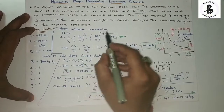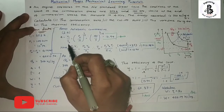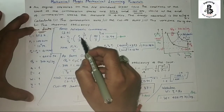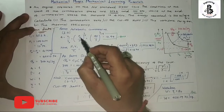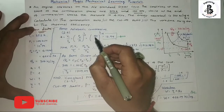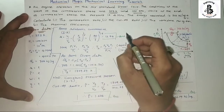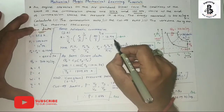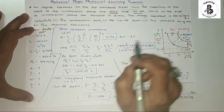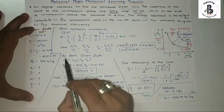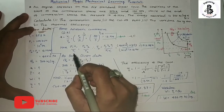From the adiabatic compression process 1→2, the compression ratio r = V1/V2 = (P2/P1)^(1/γ). Substituting P2 = 40 × 10⁵ and P1 = 1 × 10⁵, we get r = (40/1)^(1/1.4). The compression ratio is 13.94. That is answer number 1.